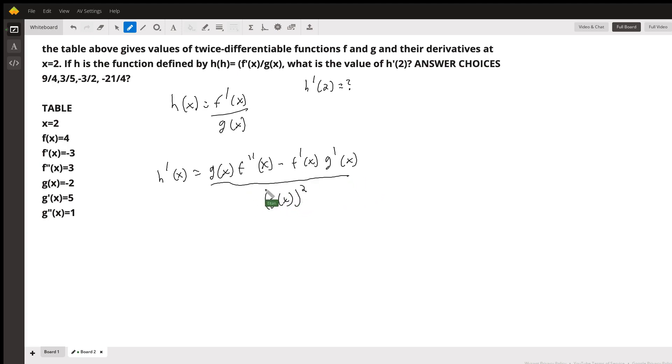And so now we have this nice function, and all we have to do is plug in 2. So h prime of 2 will be equal to g of 2, which is negative 2, times f double prime of 2, which is 3, minus f prime of 2, which is negative 3, times g prime of 2, which is 5, all over g of x, which is negative 2, squared.